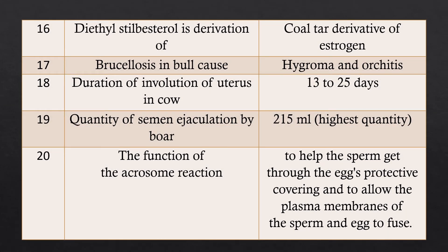Question 16: Diethylstilbestrol is a derivative of what? Answer: Diethylstilbestrol is a coal tar derivative of estrogen.